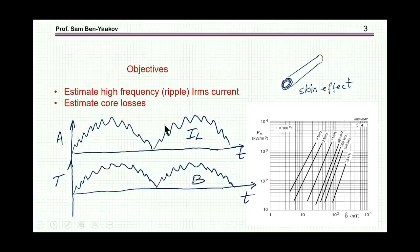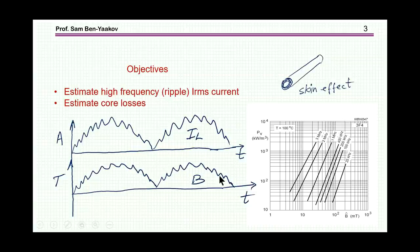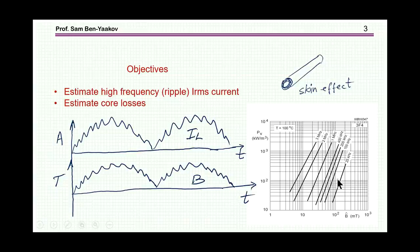For that, we do need an estimate of the RMS of the high frequency component of the inductor current, which is not constant along the period of the line. For the estimation of the core losses, we do need the deviation of the magnetic flux density. The high frequency component has the major effect on the losses, similar to the skin effect. The losses in terms of power per volume are related to the frequency and to the deviation of this high frequency component. So we do need an estimate of this high frequency component in order to estimate the core losses. These are the objectives: to get these two high frequency components from simulation.